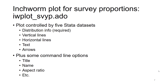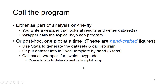So you need that information, and then there are some command-line options — you might want to add a title to your plot, change the height-to-width ratio, etc. The big picture is that we're going to make some Stata datasets, at least one and up to five, with the information to go on the plot, and then you call the program. The program that makes these plots for survey proportions is called IWPlotSVYP — this makes inchworm plots for survey proportions.